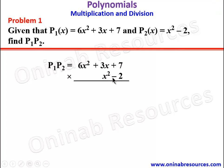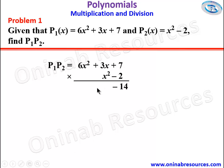So we start with negative 2 multiplied by 7, which gives negative 14. Negative 2 multiplied by 3x gives negative 6x. Negative 2 multiplied by 6x squared gives negative 12x squared. We are done multiplying the constant term of p2 by every term of p1.